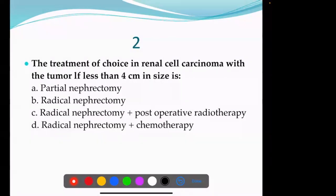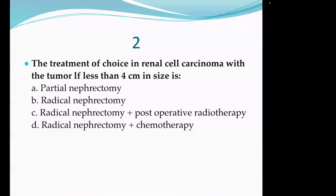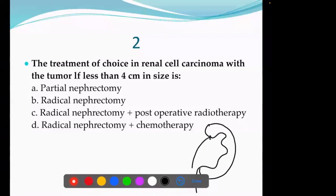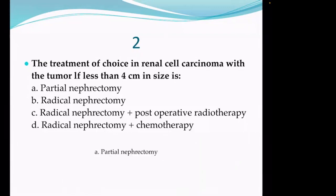Another MCQ: if the tumor is very small and the size is less than 4 cm, the answer is partial nephrectomy. Remember: if the question asks what is the gold standard or best treatment for localized RCC, the answer is always radical nephrectomy. But if it is specified that the size is less than 4 cm and no other information is given, always choose partial nephrectomy.